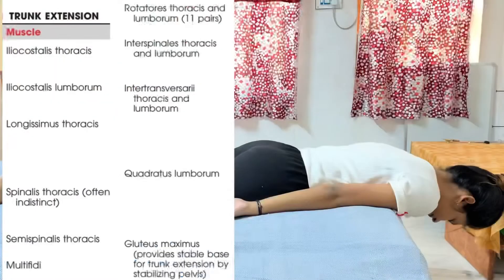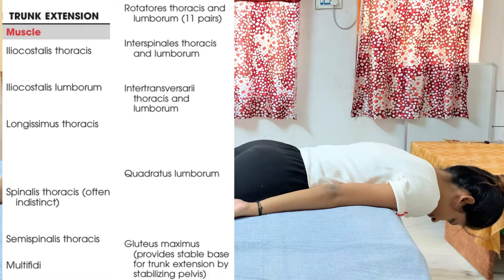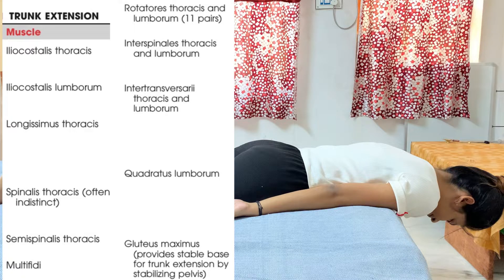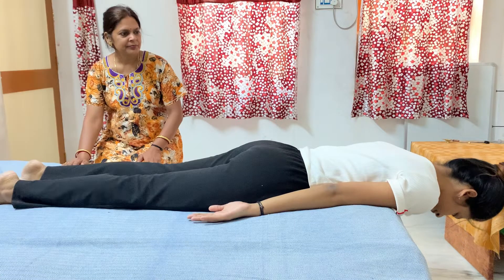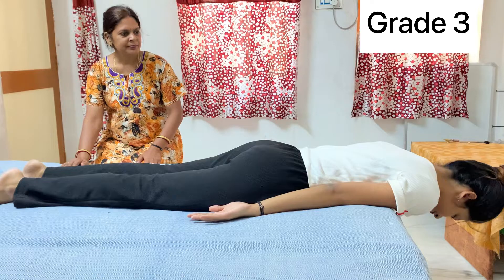The muscles involved are: iliocostalis thoracis and lumborum, longissimus thoracis, spinalis thoracis, semispinalis thoracis, multifidus, rotatores thoracis and lumborum, interspinalis thoracis and lumborum, intertransversi thoracis and lumborum, quadratus lumborum, and gluteus maximus. Now we will start with Grade 3, which is similar for both thorax and lumbar area.